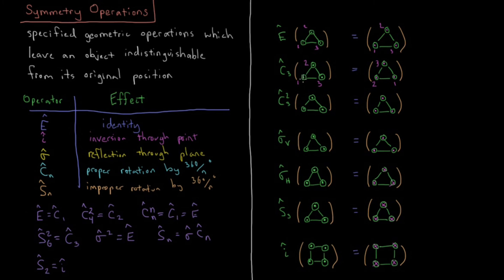C3 squared, I do that twice. Rotate, my one goes to here, now it goes to here. So one, two, three becomes one, two, three.